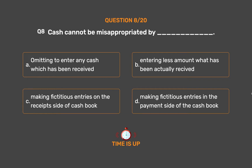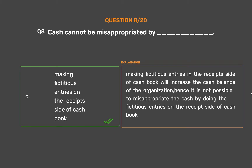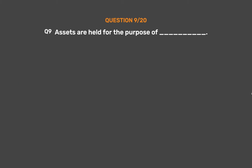The correct answer is option C: making fictitious entries on the receipt side of the cash book. Making fictitious entries on the receipt side of the cash book will increase the cash balance of the organisation; hence it is not possible to misappropriate cash by making fictitious entries on the receipt side.